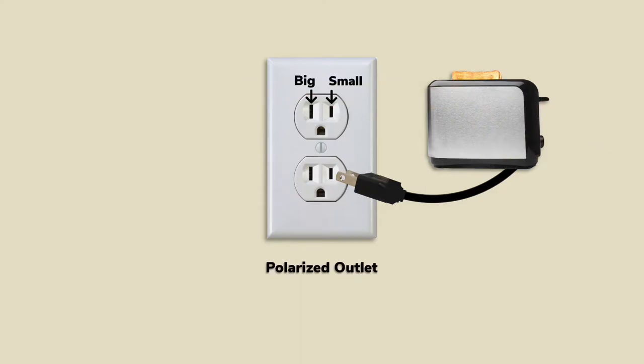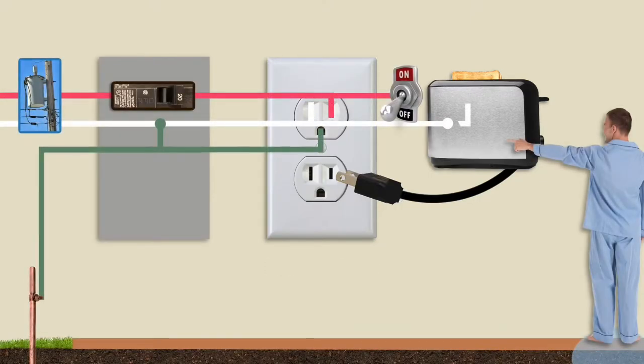Modern two-prong plugs do offer some margin of safety because they're polarized and can only be inserted one way. This allows appliances to be wired so that the hotline is always connected to the power switch. So when the appliance is turned off, there's no possibility that the hot side can come in contact with the metal case.